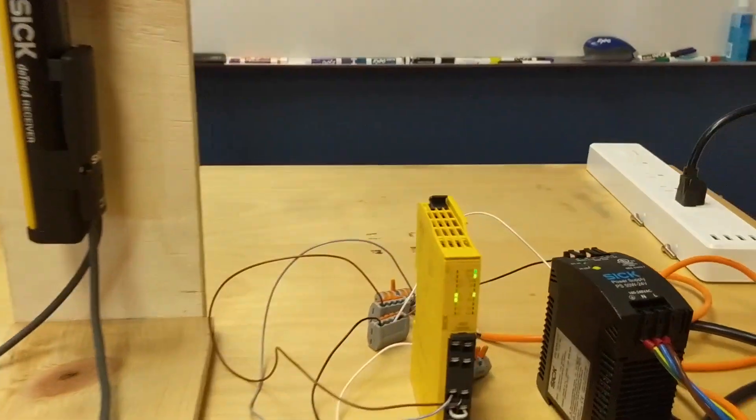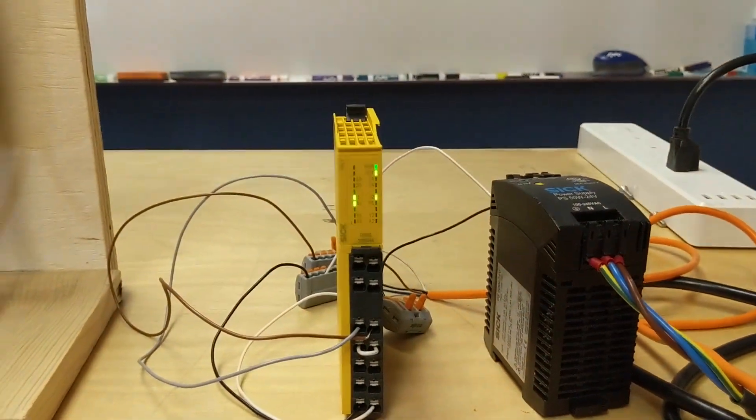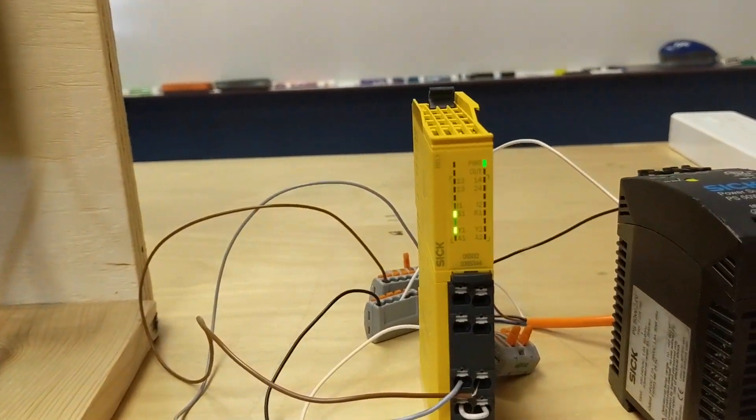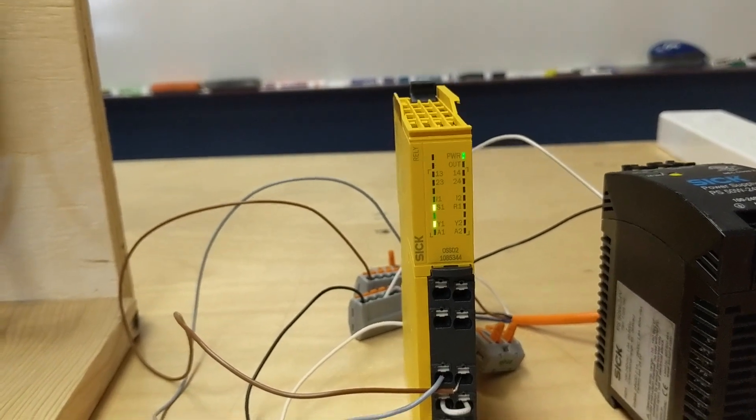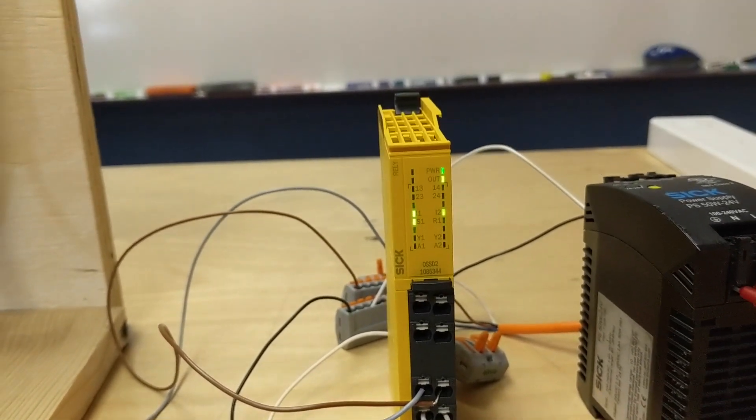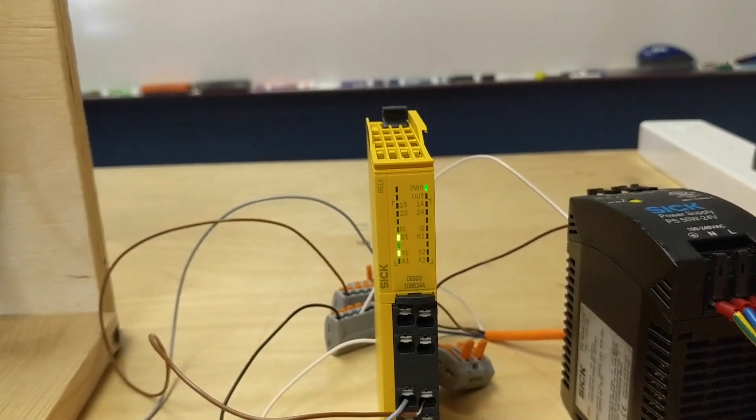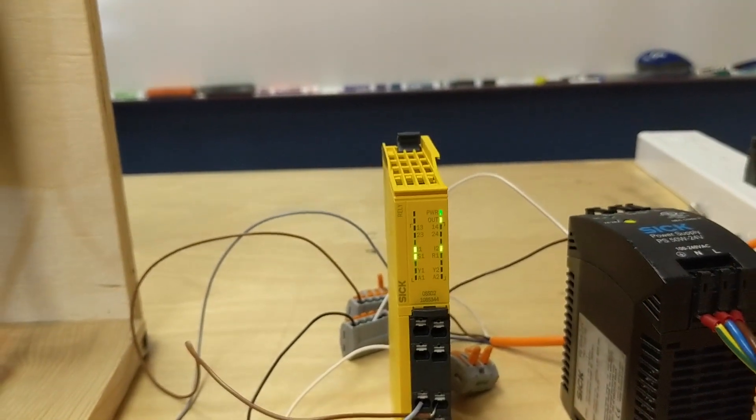If you're watching the LED lights as I put my arm through, both LED lights go off for the I1 and I2. When I take it back it automatically resets and the lights go back on. There they go off and now they're back on.